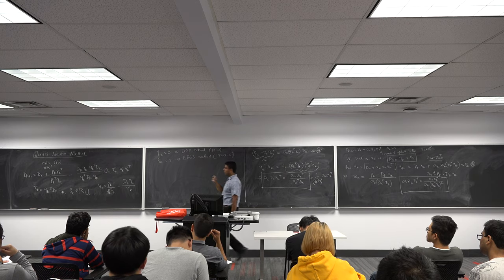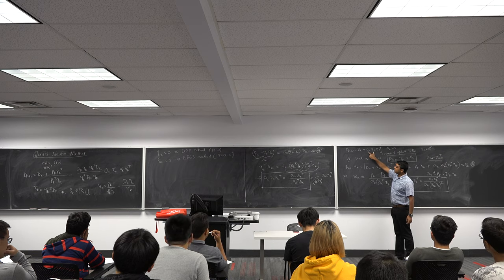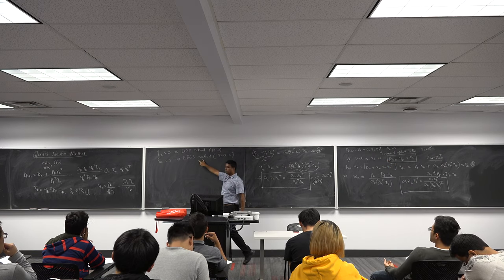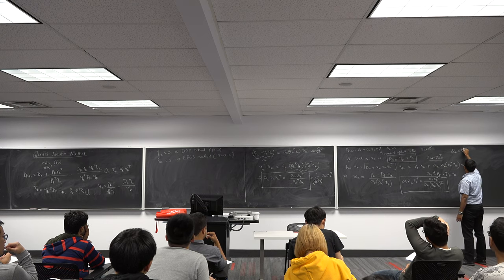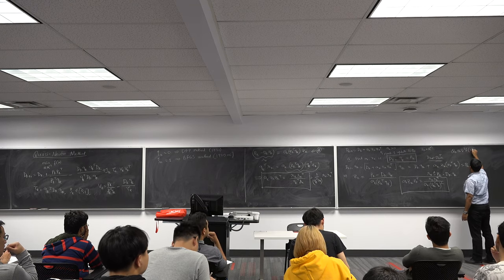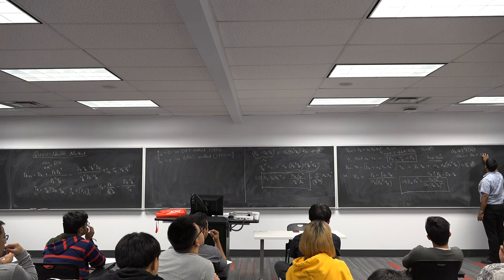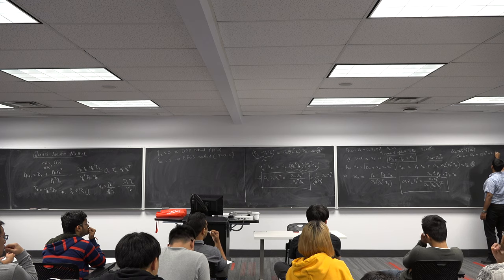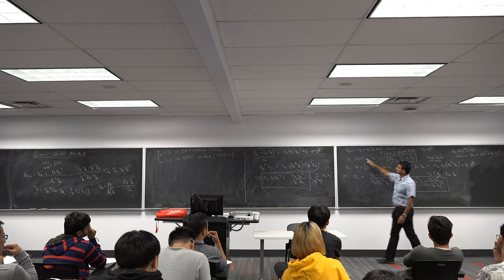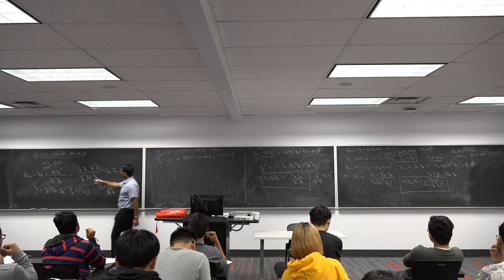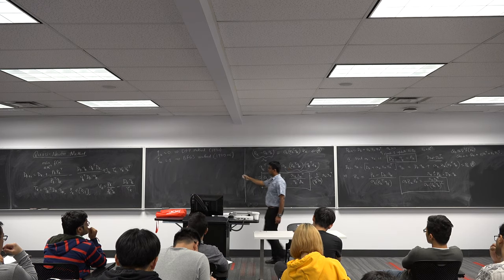To emphasize: you get the DFP method by doing a rank-2 update of D_k directly; you get the BFGS method by doing a rank-2 update of the second derivative Q_k itself — so Q_{k+1} = Q_k + z_1 z_1^T + z_2 z_2^T — and then taking the inverse to get D_{k+1}. The expression will be complicated but with many cancellations, yielding the BFGS update.